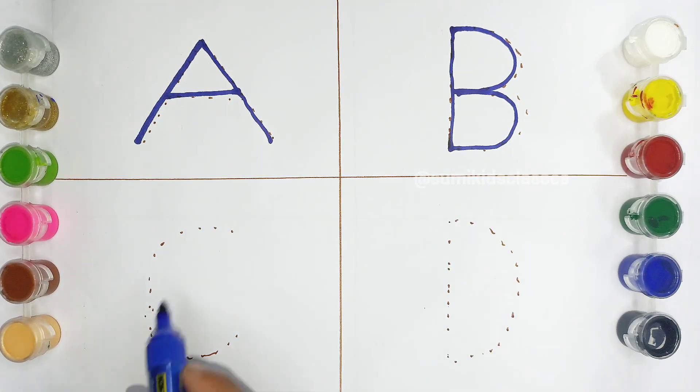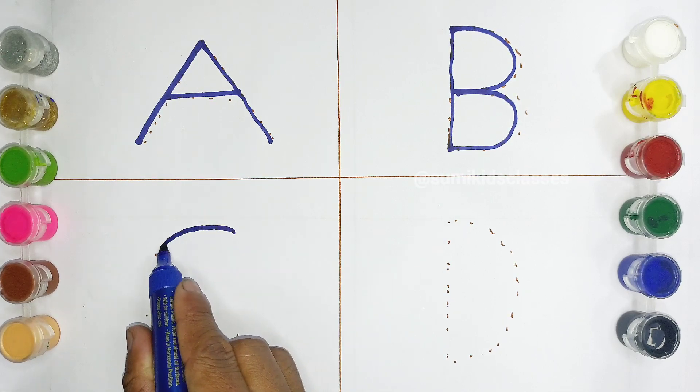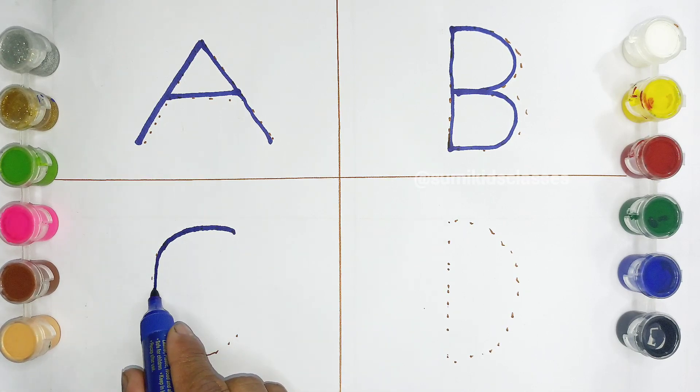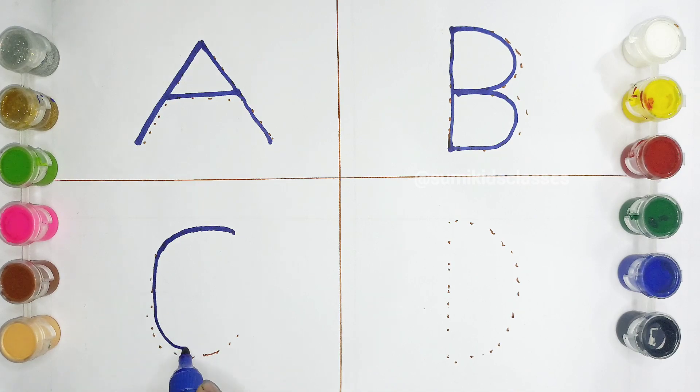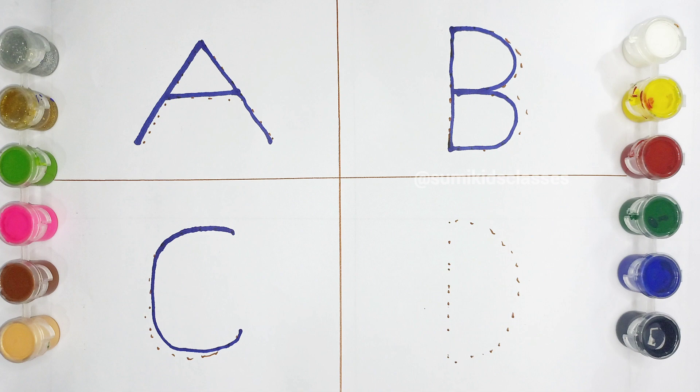Now learn to write letter C. Draw a curved line coming from the top down in the middle and curve it up again. It's letter C. Very good.